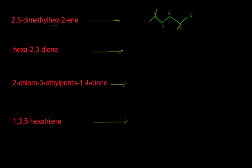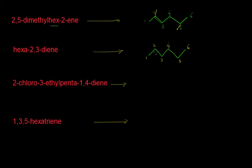Let us look at the second example: hexa-2,3-diene. 'Hexa' means 6 carbon atoms, so we draw 1, 2, 3, 4, 5, and 6. At position number 2 and 3 we have double bonds. Let me write the numbers 1, 2, 3, 4, 5, and 6 — we have double bonds at position number 2 as well as at position number 3. This is hexa-2,3-diene.